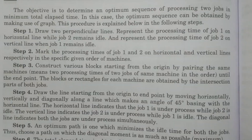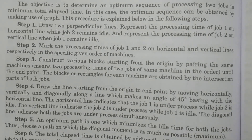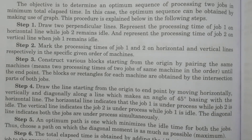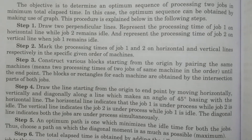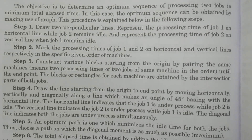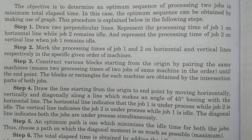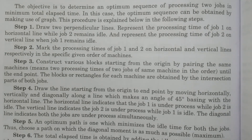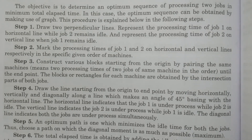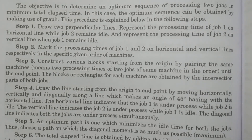Now, the procedure or algorithm for obtaining the optimum sequence and finding the idle times of the two jobs in the K machine problem through the graphical method is as follows.